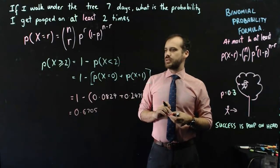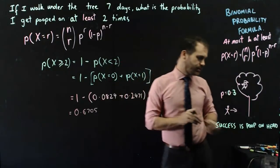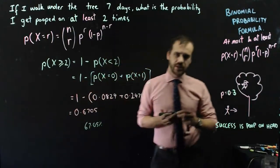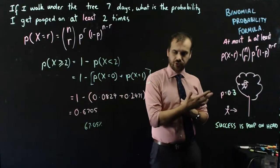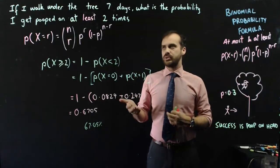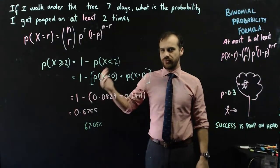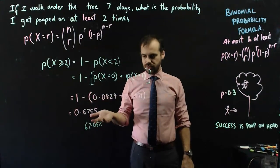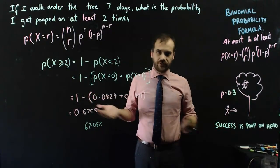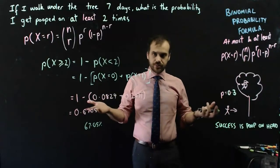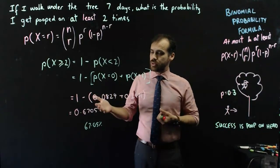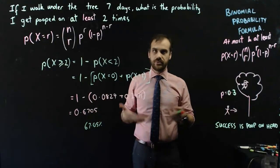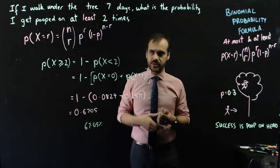So what does that mean? There is a 67.05% chance that in a week, if you pass under that tree every time, you will get pooped on at least two times. Two or three or four or five or six or seven. I don't really like those odds. So out of a full year, you're probably getting pooped on at least twice in a week 67% of those weeks, 30-something of those weeks. Pretty horrible.